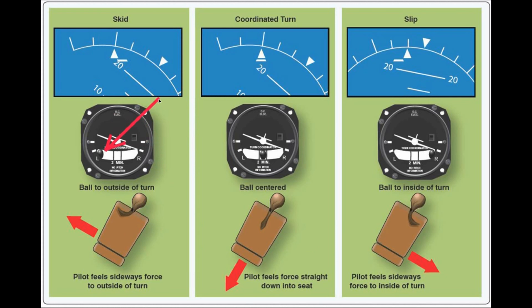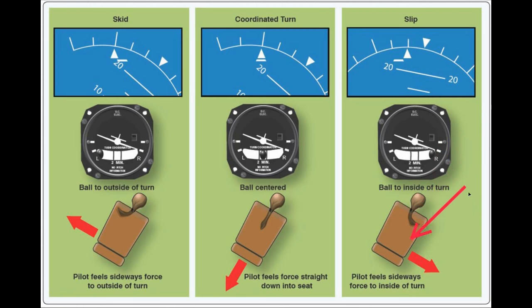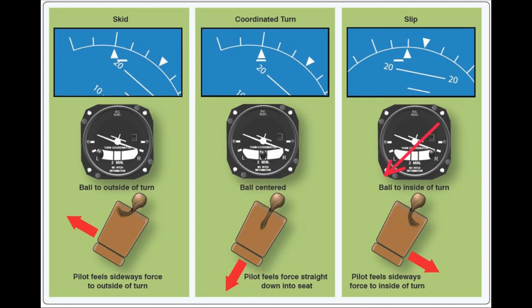The rule of thumb is step on the ball. So if the ball is over on the left, when you add left rudder it's going to bring the ball back to center and get you back to coordinated flight. The same thing is true on a slip — the ball is all the way over on the right, so you would add right rudder to bring the ball back to center and end up in coordinated flight.